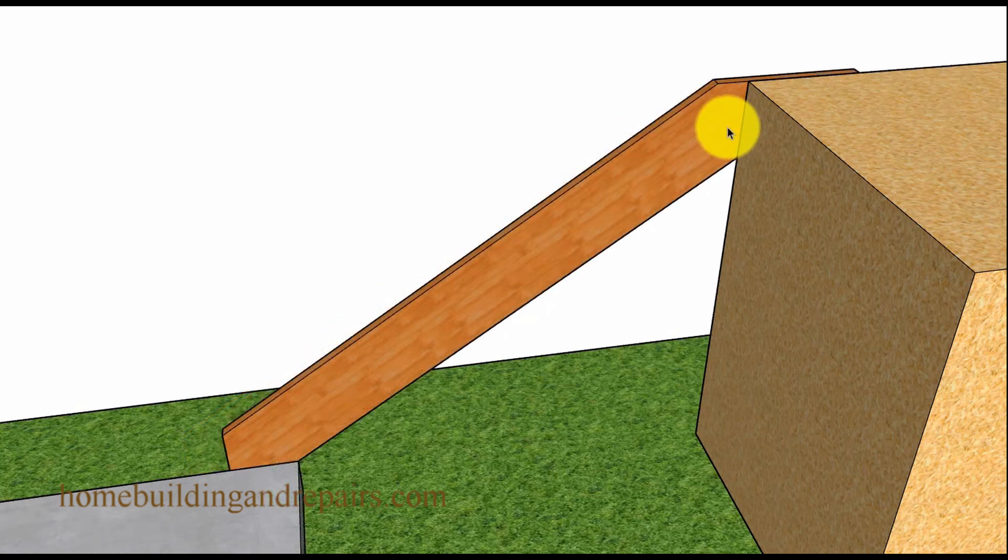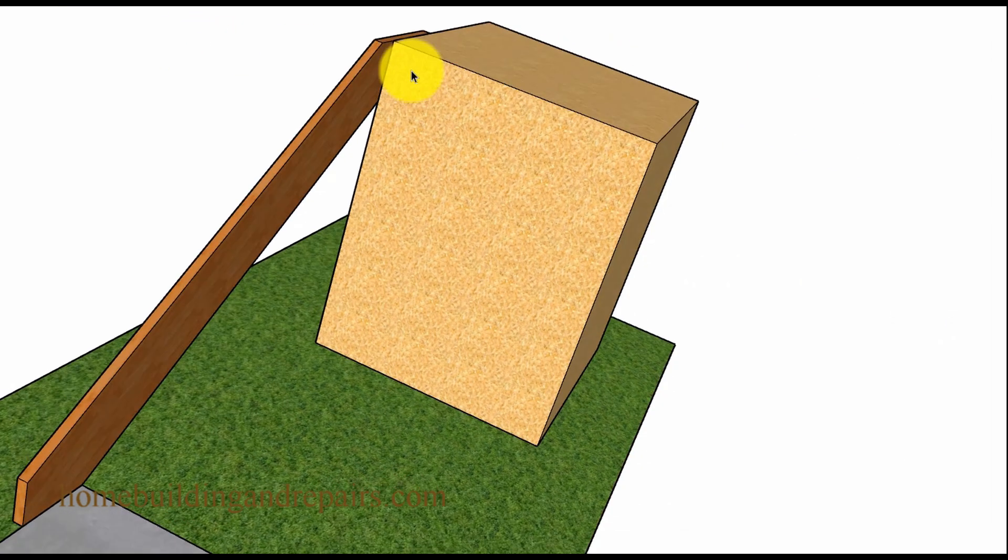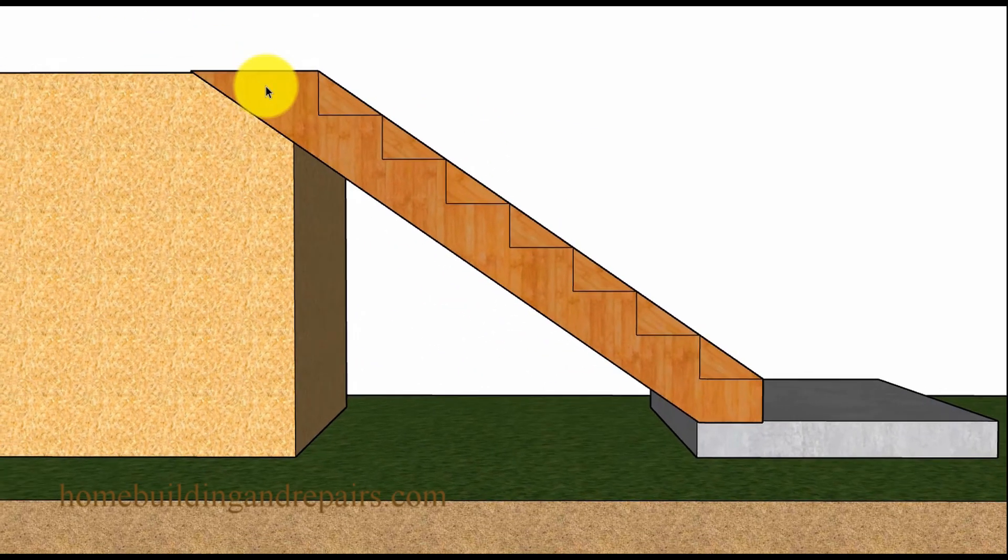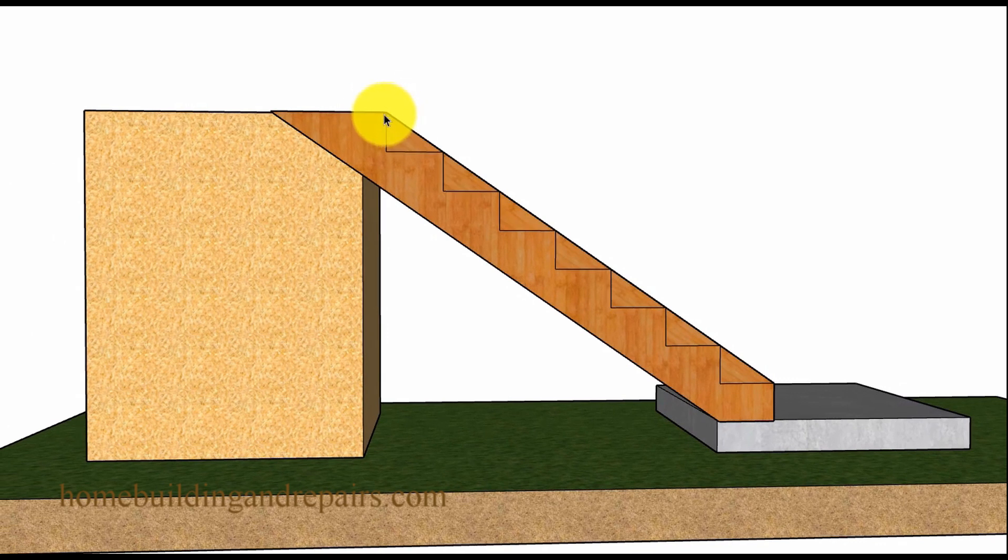Now if we reverse the situation and the landing and the stairs needs to be a little closer to the platform, then you can see here how this would simply work and you would just cut the top a little shorter instead of a little longer.